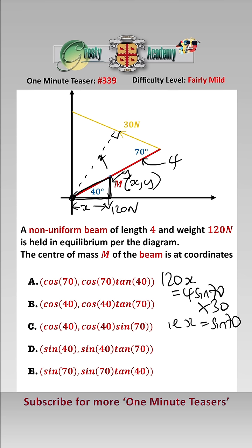This is y, and so therefore y is equal to x tan 40, and so therefore our coordinates are x equals sine 70, y equals sine 70 tan 40, which is answer E.